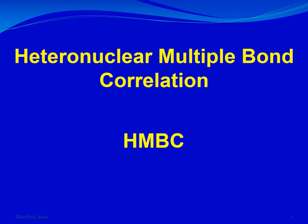Heteronuclear Multiple Bond Correlation Spectroscopy, or HMBC, is another two-dimensional NMR technique that gives further information about the structure of the molecule. We will see what type of information we can get from the spectrum and how to interpret and read the spectrum. So let's begin.